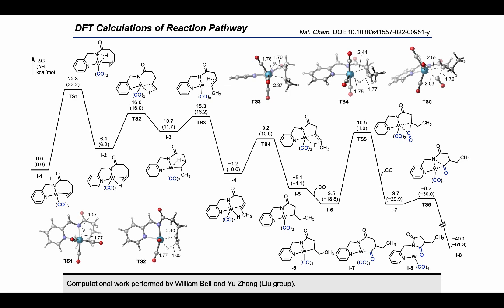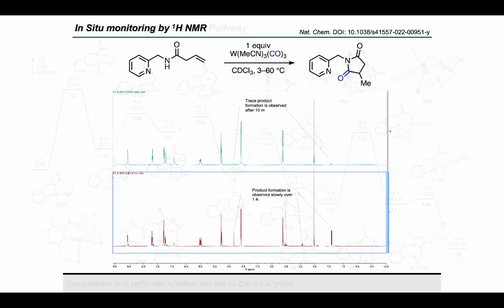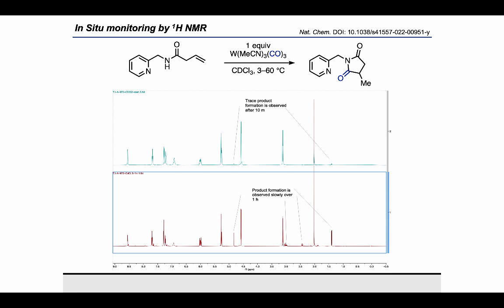As you can see from the calculated free energies, spectroscopic detection of any intermediates is likely to be very challenging as the rate-determining step is the first step of this sequence. This indeed was the case when monitoring the reaction with the stoichiometric amount of tris-acetonitrile tungsten tricarbonyl. Even variable temperature NMR had no effect and only starting material and product could be detected by 1H NMR.